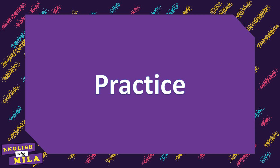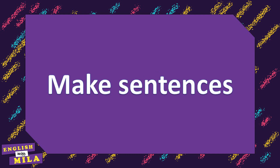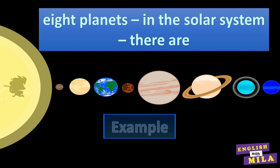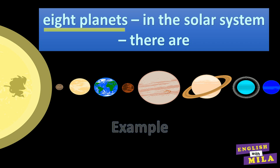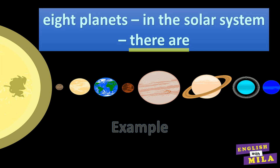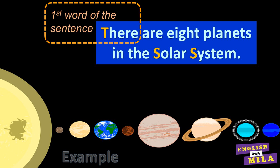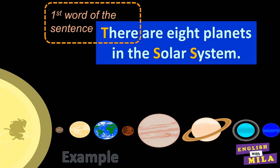Now it's time to practice our rule a little bit. You will see some phrases and your task will be to make sentences. Be careful — some of the words must be capitalized. For example: 'eight planets in the solar system there are.' The correct order is: 'There are eight planets in the solar system.' The words 'There' and 'Solar System' must be capitalized, because 'There' is the first word of the sentence, and 'Solar System' is the name of the star system.